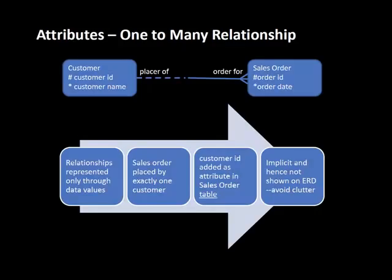Now, looking at a one-to-many relationship — the same customer placing sales orders scenario. We know that relationships are represented only through data values, which is a property of relational databases. And we know that sales orders are placed by exactly one customer, because the lower limit is one and the upper limit is one.